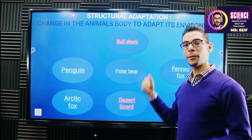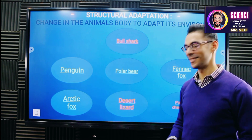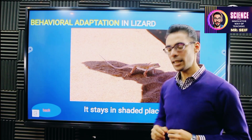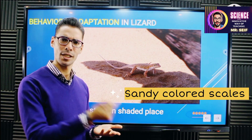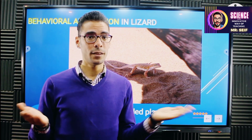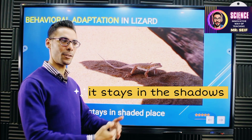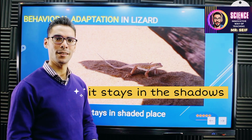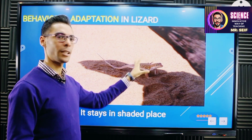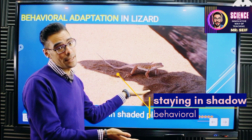We visited penguins, polar bear, fennec fox, Arctic fox. What's next? The desert lizard. It has sandy colored scales — part of the body — so that's a structural adaptation. But it stays in the shadow or in a shaded place. Staying in a shaded place is an action the lizards are doing, so it's behavioral adaptation.